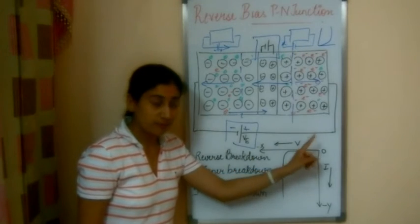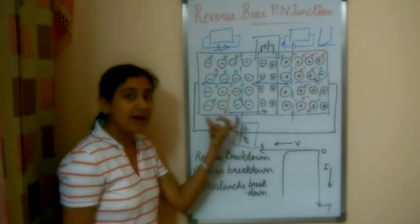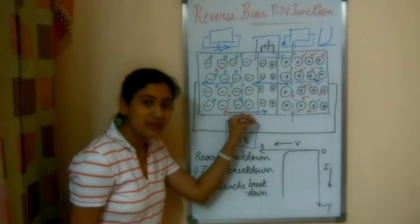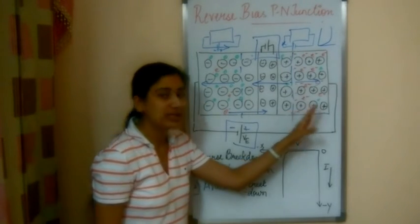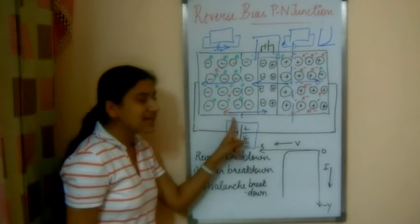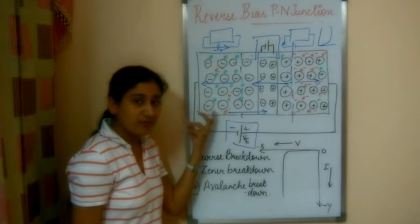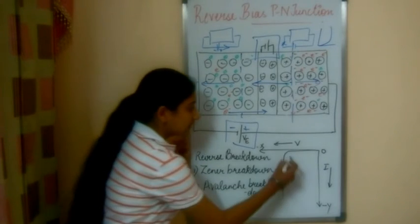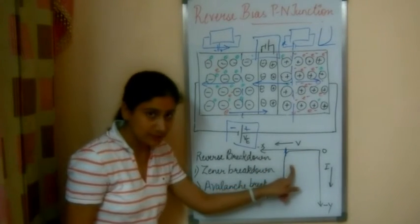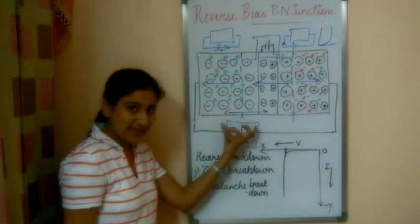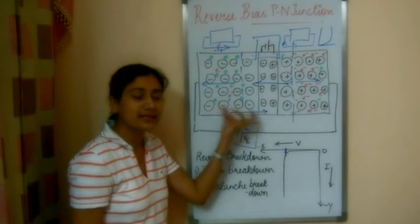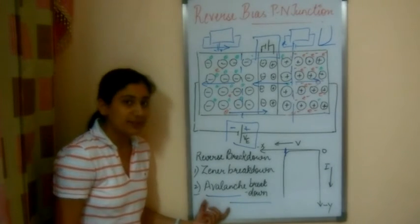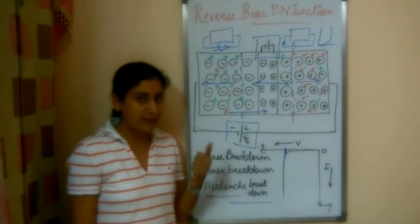The minority carriers strike with the bonds and break them, causing an increase in the number of minority carriers and so more current starts flowing. At a particular voltage, the minority carriers gain so much energy that they strike with the covalent bonds in the junction and break them, further increasing the minority carriers and causing the current to increase abruptly. This type of process — where a small increase in voltage causes an abrupt increase in current — is associated with the breakdown voltage, and this process is called the avalanche process.